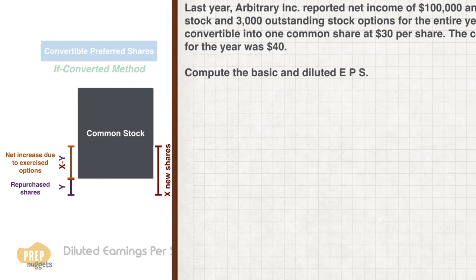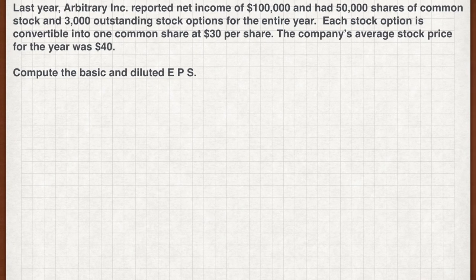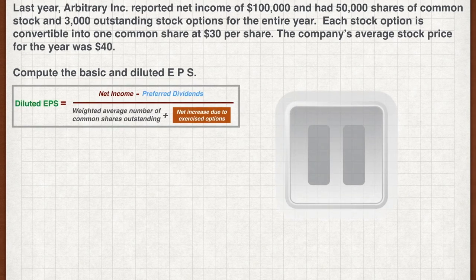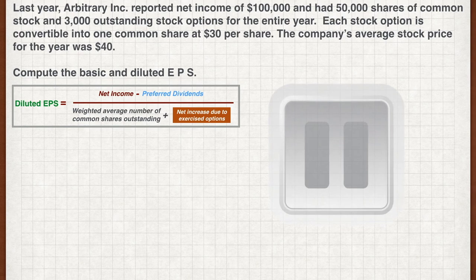Let's learn how to apply this method. Last year, Arbitrary Incorporated reported net income of $100,000 and had 50,000 shares of common stock and 3,000 outstanding stock options for the entire year. Each stock option is convertible into one common share at $30 per share. The company's average stock price for the year was $40. Compute the basic and diluted EPS using the treasury stock method.